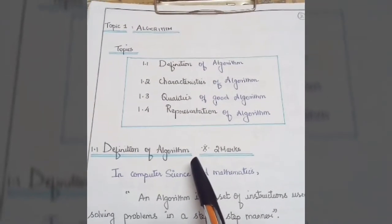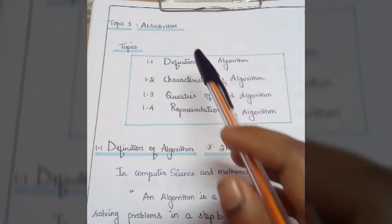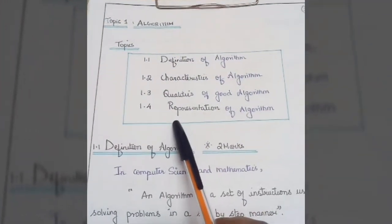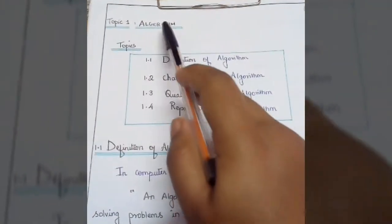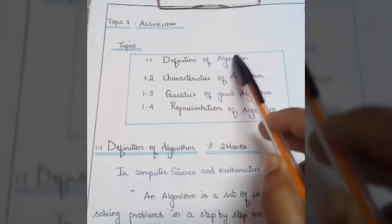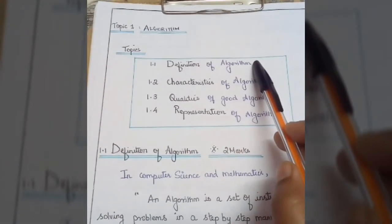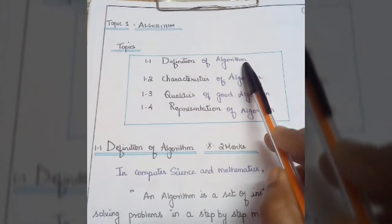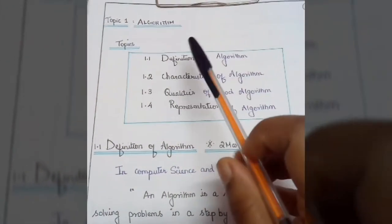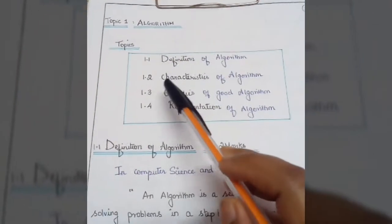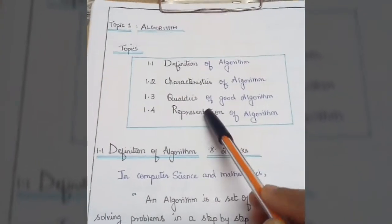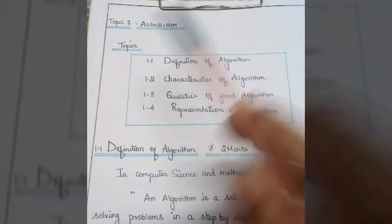In this video we will move to the next subtopics of the algorithm, namely the characteristics of an algorithm, qualities of an algorithm, and representation of an algorithm. If this algorithm question is asked for two marks, you have to write the definition of an algorithm. For eight marks, we have to write the characteristics, qualities, and representation along with the definition.